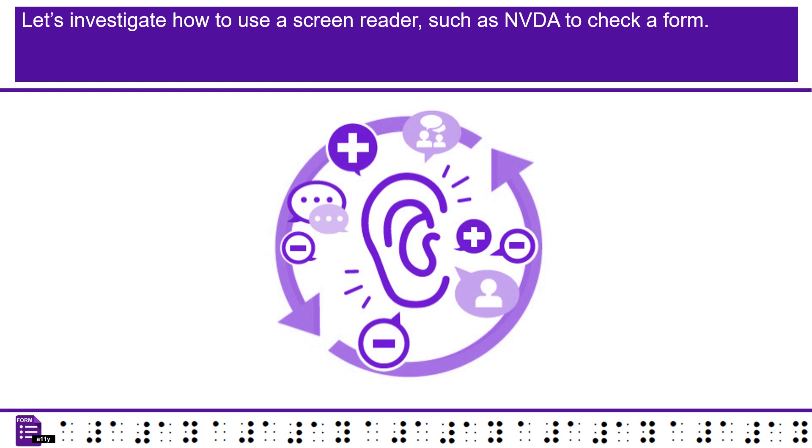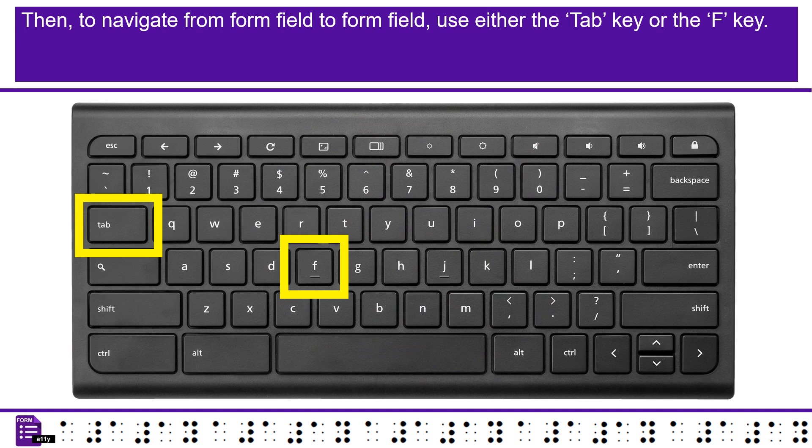Let's investigate how to use a screen reader, such as NVDA, to check a form. First, to turn on NVDA, use the keystroke. Then, to navigate from form field to form field, use either the tab key or the F key.